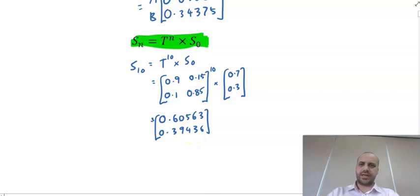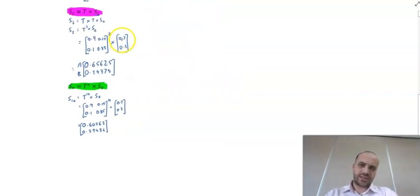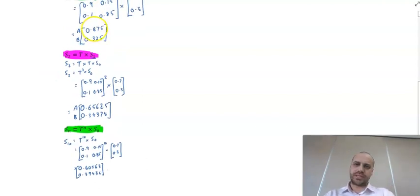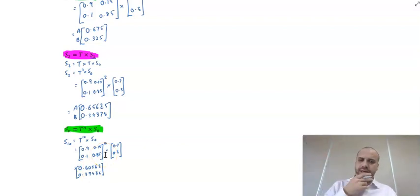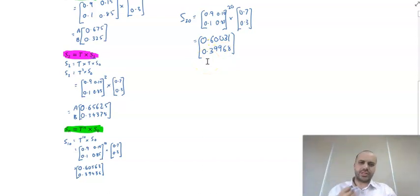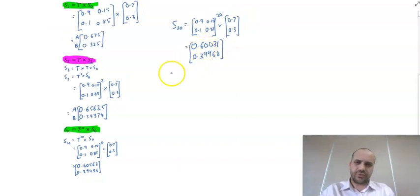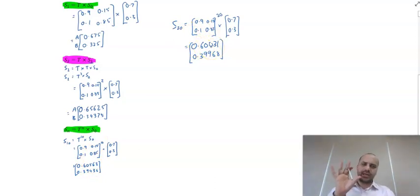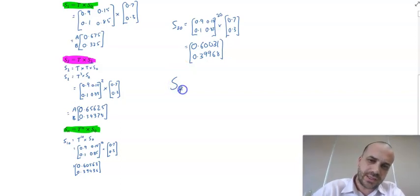After 10 years, the result is 60.56% Aardvark fans and 39.43% Bronco fans. We started at 70%, came down to 67.5% after one year, 65.6% after two years, and it's taken 10 years to reach 60.56%. After 20 years, it's 60.03% — it's really starting to level off. The Aardvarks aren't losing fans indefinitely; the proportion is converging.